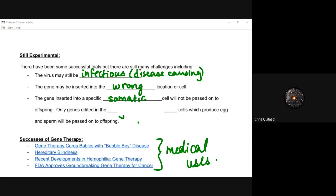The gene may be inserted into the wrong location, or the gene may be inserted into specific somatic cells, which will not be passed on to offspring. Only genes edited in gamete cells will produce egg and sperm that will be passed to offspring. Those two things are kind of one and the same as far as I'm concerned, simply because the location really matters and whether or not that disease gets passed on to someone else is also a huge component of it.